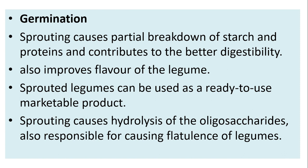Germination or sprouting causes partial breakdown of starch and proteins, contributing to better digestibility and improved flavor of the legume. Sprouted legumes can be used as ready-to-use marketable products. Sprouting also causes hydrolysis of the oligosaccharides responsible for causing flatulence in legumes.